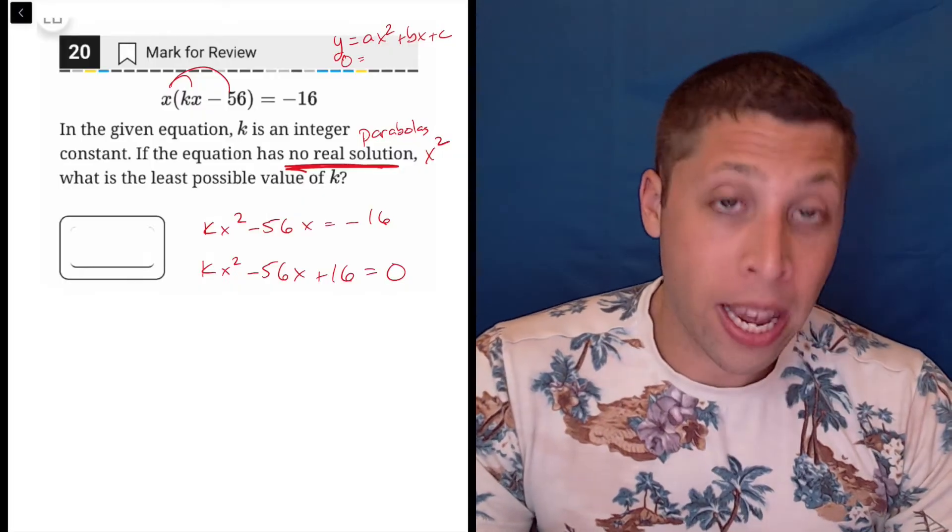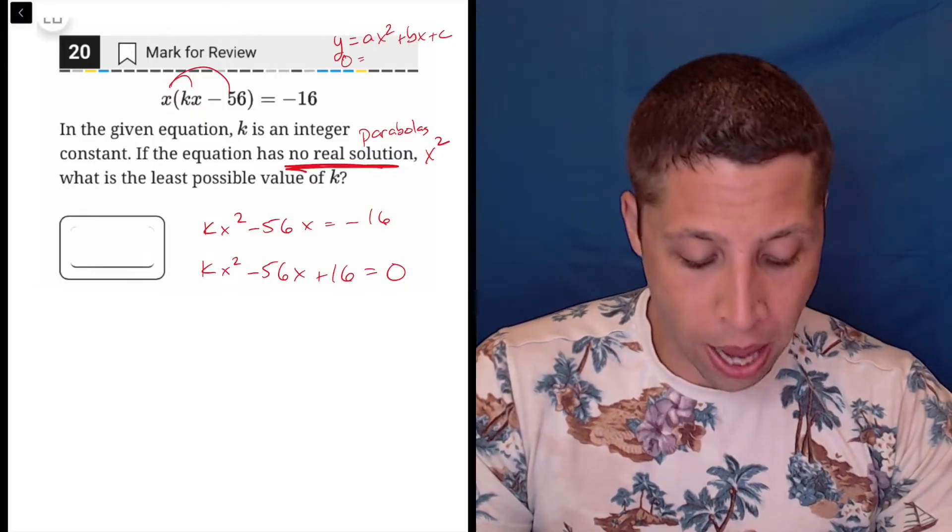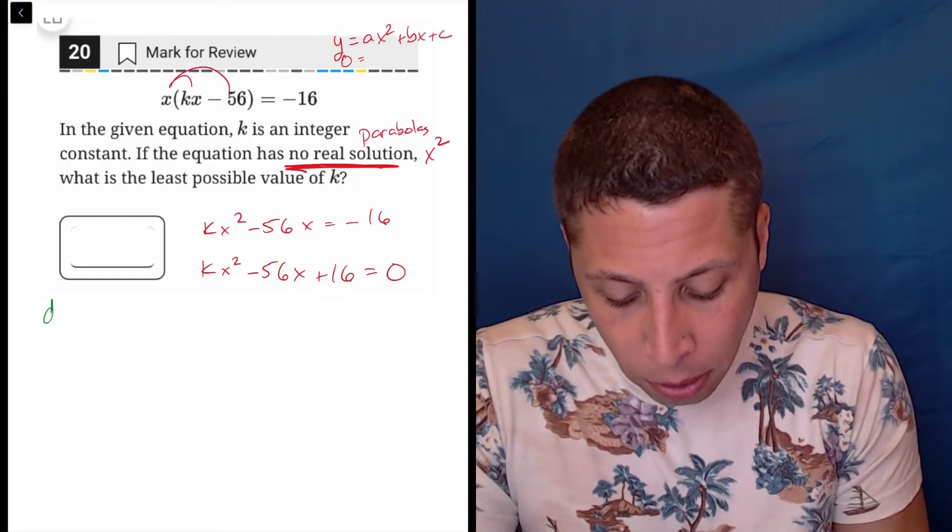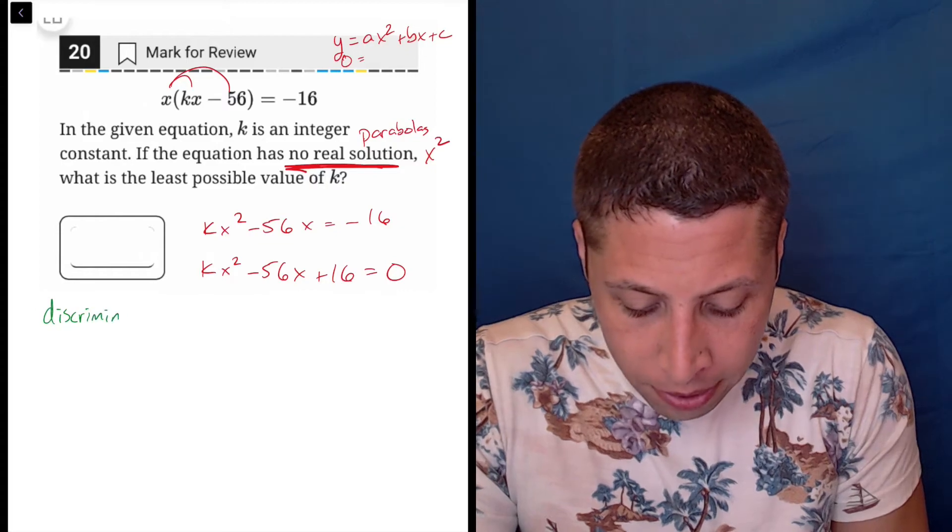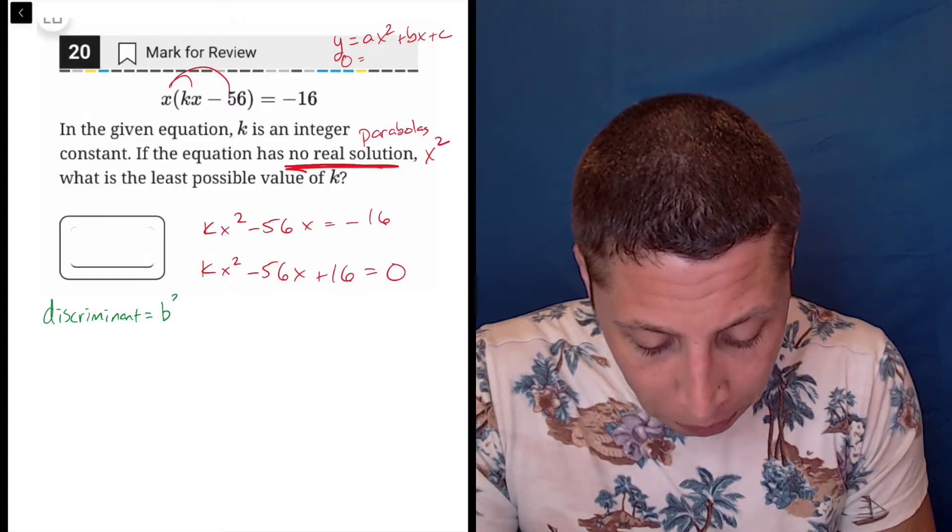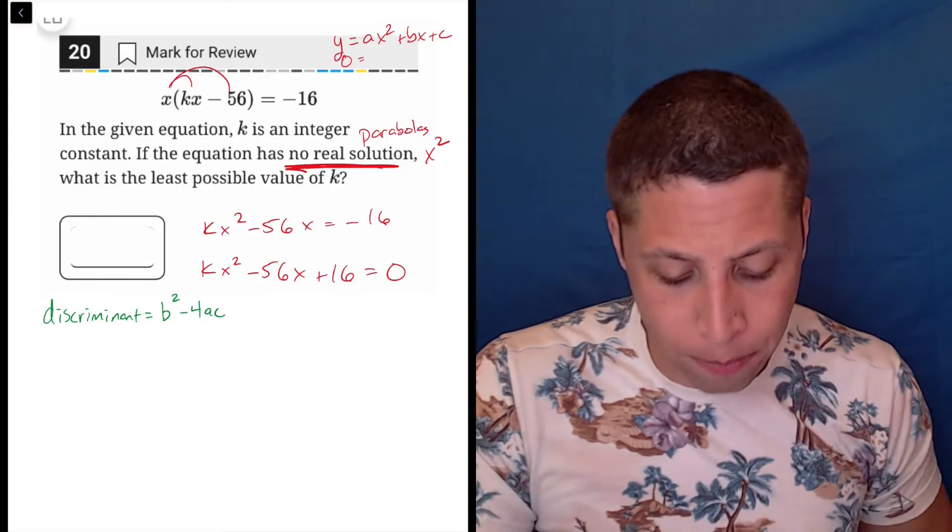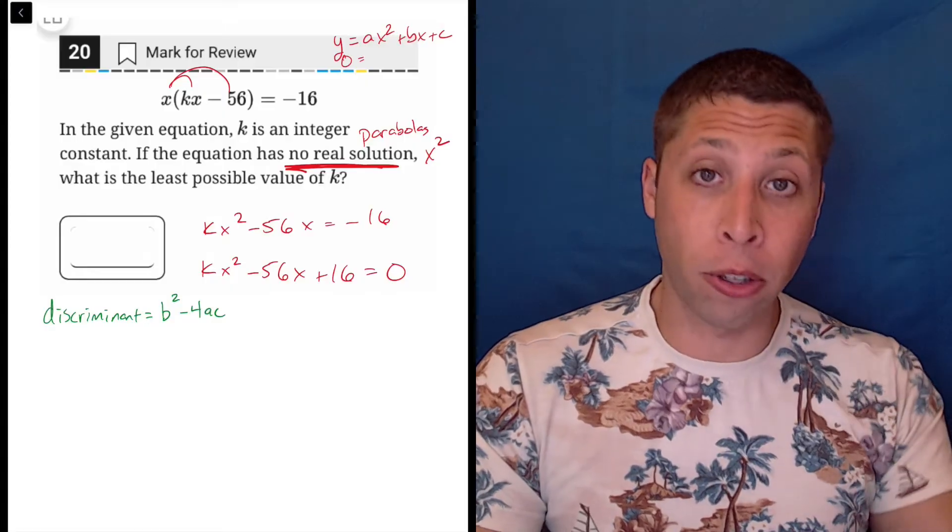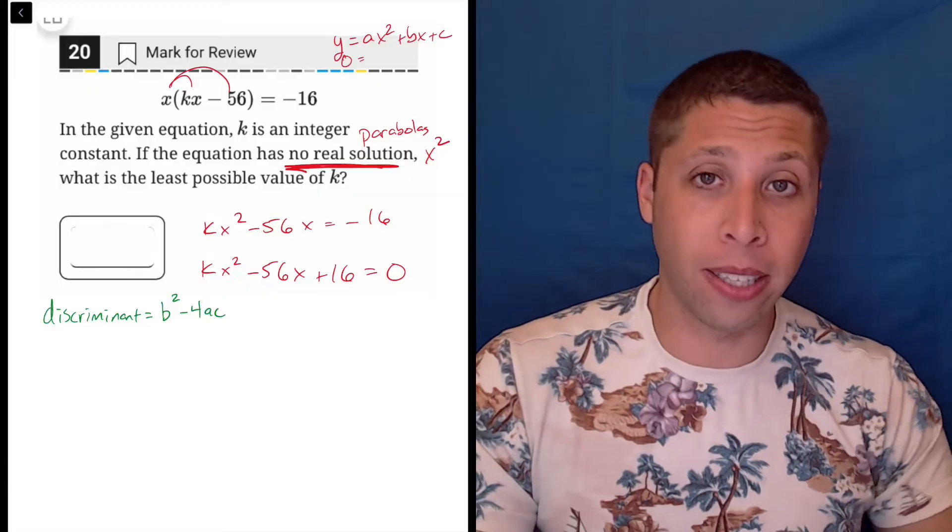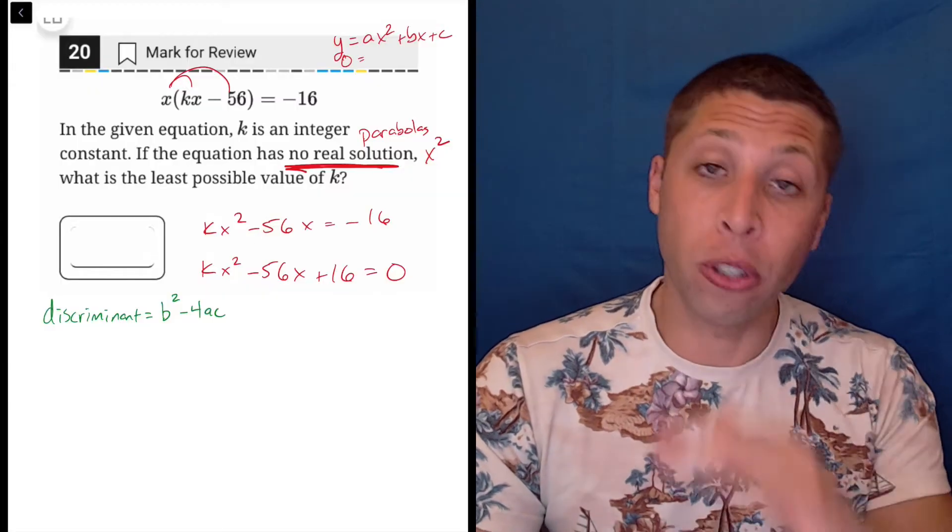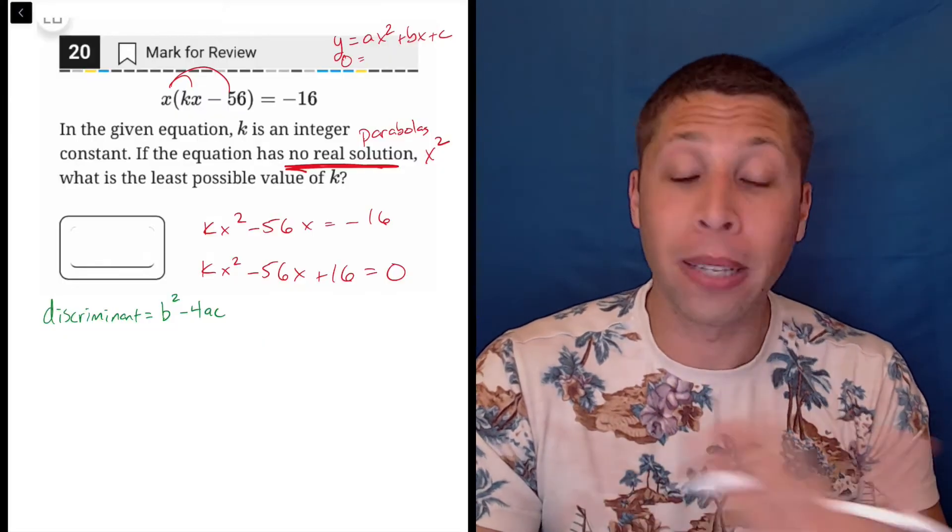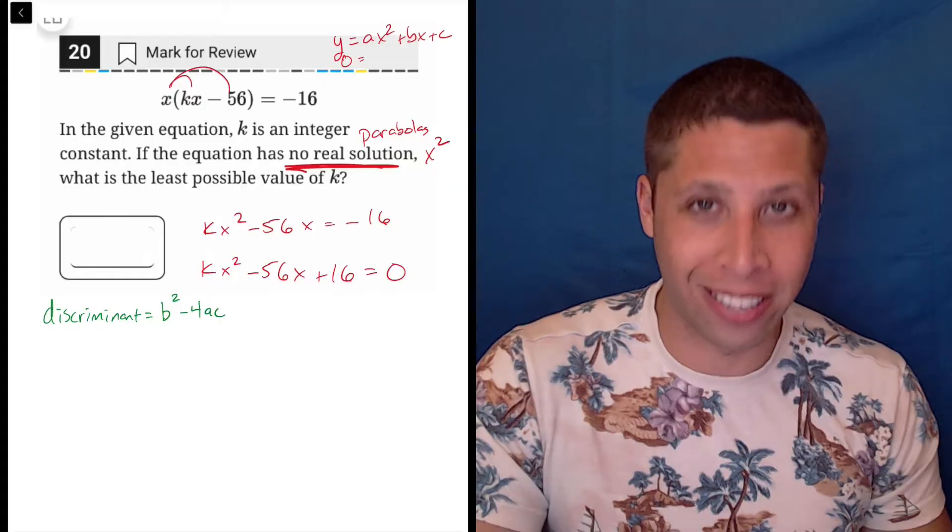Now, I don't actually care what the x-intercepts are, the solutions. I only care how many there are. And so for this we're going to use an idea called the discriminant. Many of you in Algebra 2 or higher have already done this in school, but you probably forgot it. It is b squared minus 4ac, which is part of the quadratic formula, the part under the radical. That piece by itself tells us the number of solutions without telling us exactly what those solutions are.